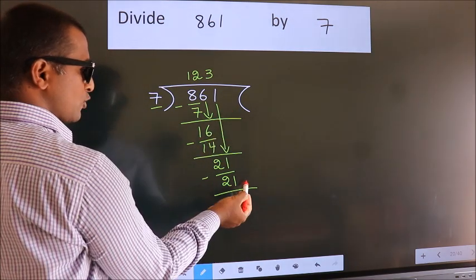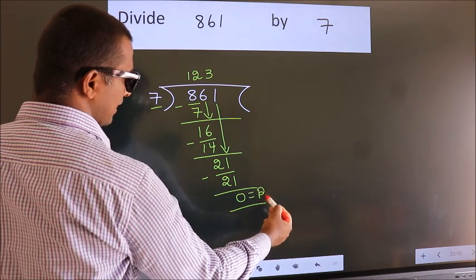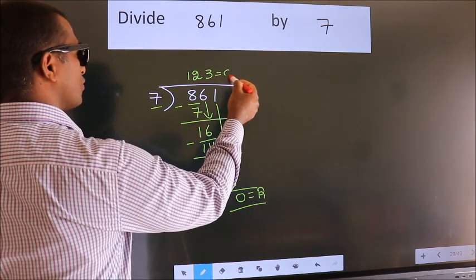No more numbers to bring it down. So, we stop here. This is our remainder. This is our quotient.